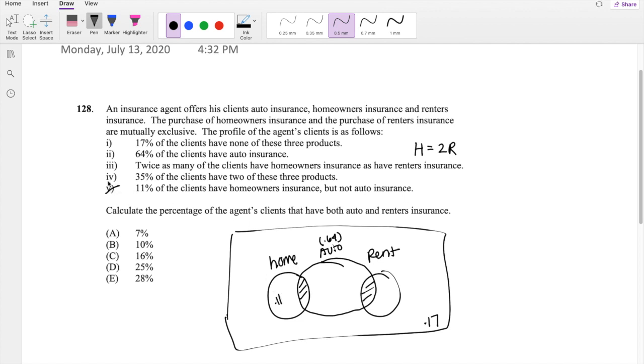So the information that we completely used out is this one, this one, and this one. If there's 17 on the outside, that means on the inside there must be 1 minus 0.17, which is equal to 0.83. If we know the auto insurance is 64% and this whole thing adds up to 83, we know just this part and just this part is 0.83 minus 64, which is equal to 0.19.